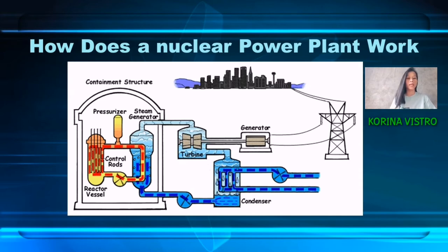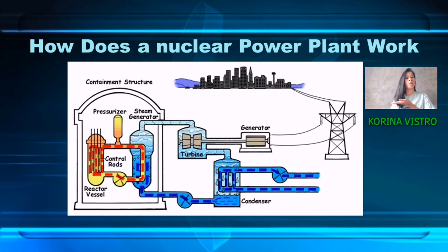The water then begins to boil and produce steam that turns a turbine. When the turbine turns, a generator does as well, and this creates our electricity. You can see this in the picture — kung ano po yung process.